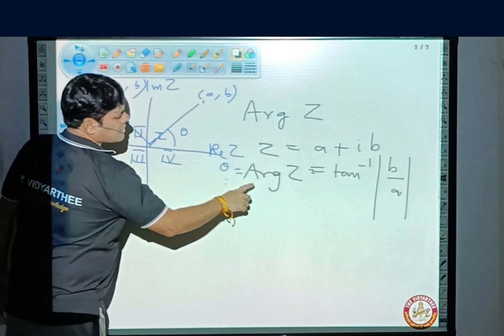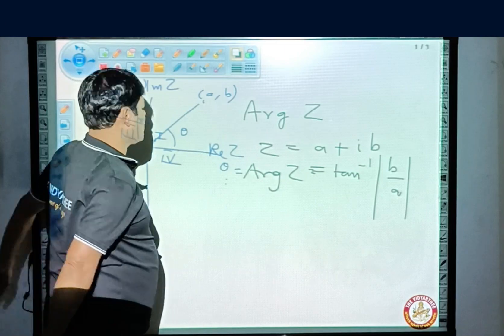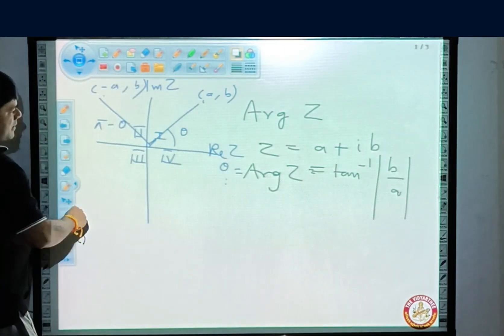Now, what is this theta? Theta is the same value which you have found out by taking the tan inverse of the mod of b value.